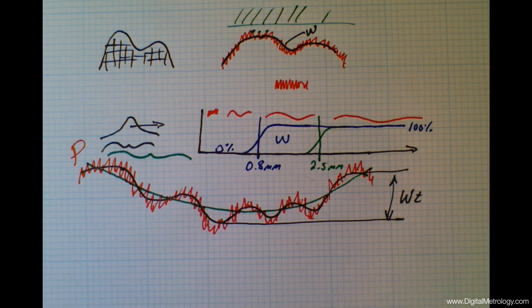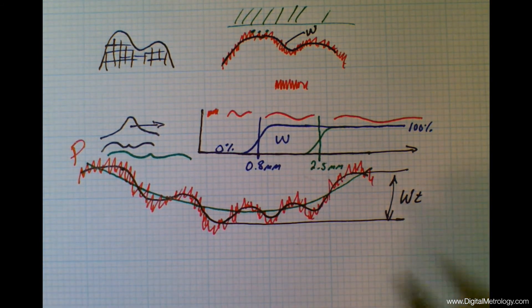So the most common way of specifying a waviness control is this waviness total parameter, WT.